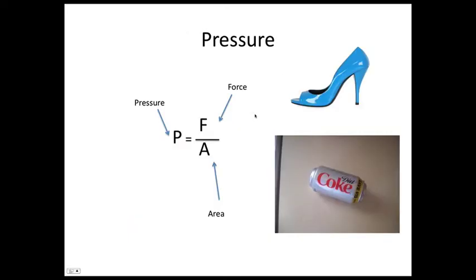Pressure equals force over area. This explains why stilettos tend to mark floors — the area is very small so pressure is very large. Similarly, if a Coke can is left in a hot car, the pressure inside increases, increasing the force on the walls and potentially causing them to buckle.